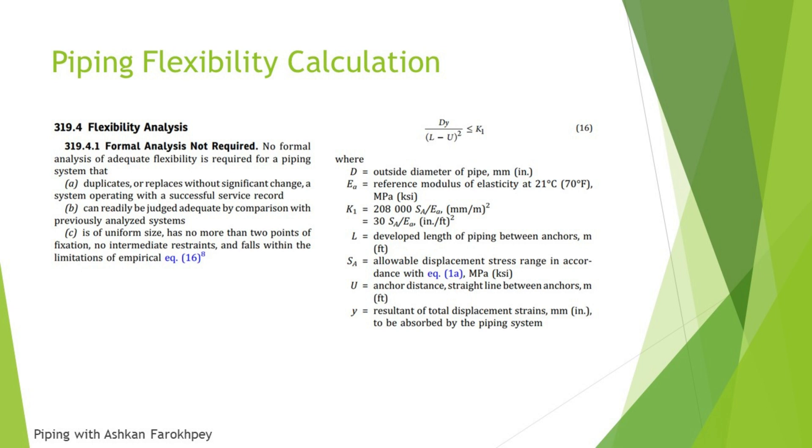In section B, the code says that a new system can readily be judged adequate by comparison with previously analyzed systems. It is just the same as paragraph A, section A. It says that if you have analyzed the system, stress analyzed the system, and you are making a new one just like the first one, you don't need to do stress or flexibility analysis. Both sections A and B are the same I think, because they are saying that if you have a system or you analyze the system and you're making a copy, making a duplicate of that, you don't need to do flexibility analysis. And I think it is something that rarely happens.